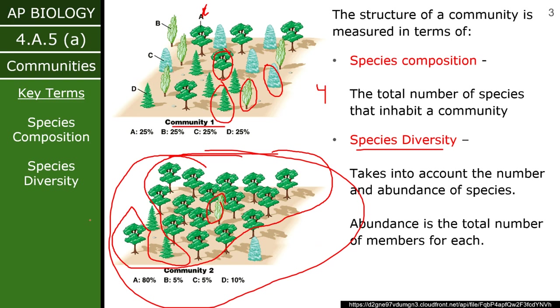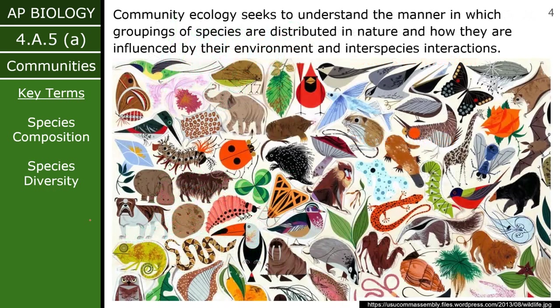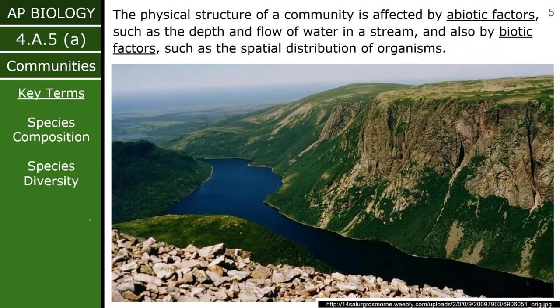We're going to do some activities in class where we get to calculate how diverse a community is, because there is an equation you need to be able to use. You don't need to memorize it because it will be on your formula sheet. Basically, we're trying to figure out how species are interacting with one another and how that interaction might be influenced by their environment.